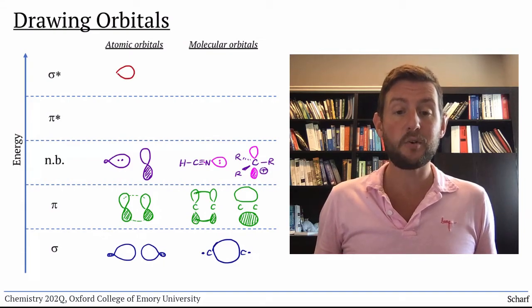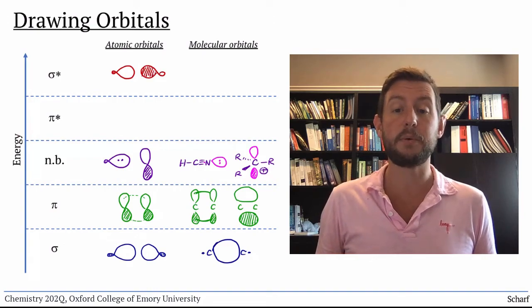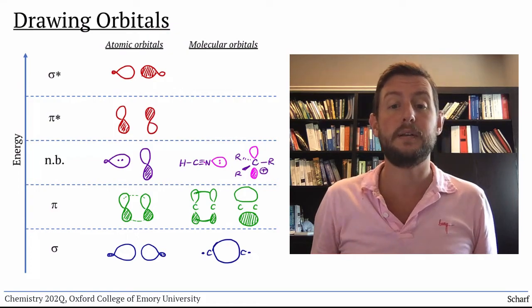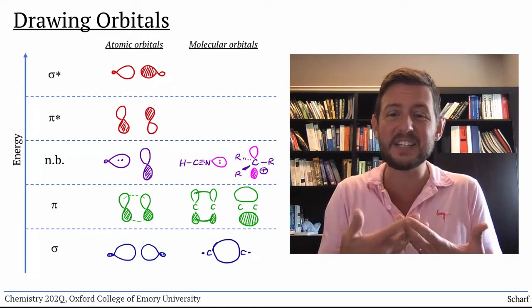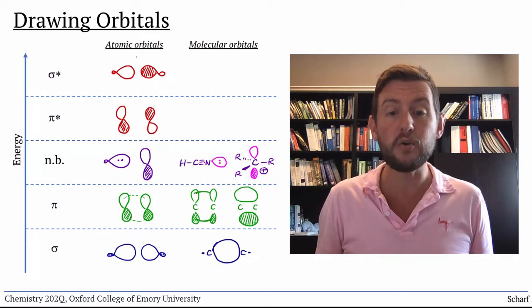Anti-bonding orbitals come from the same atomic orbitals as their bonding counterparts, just with out-of-phase overlap. This means that the orbitals essentially cancel each other out in between the two atoms. There's a node between them.